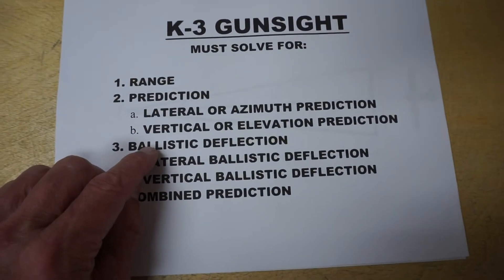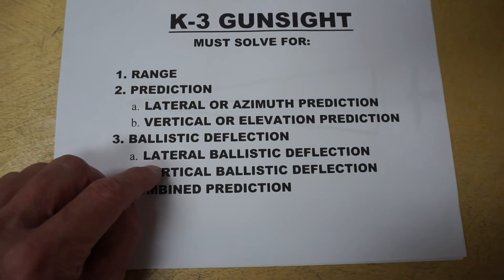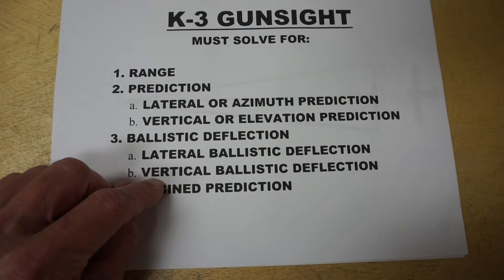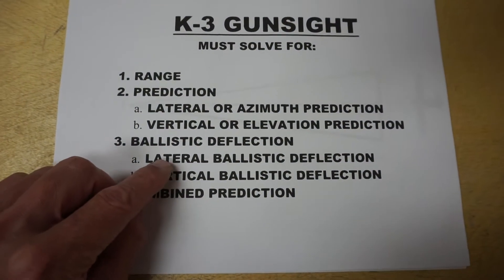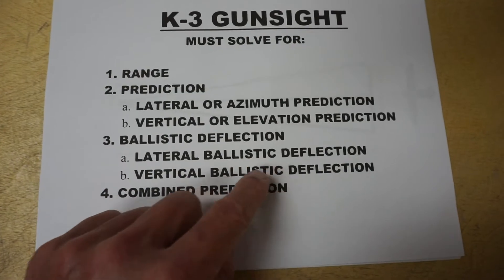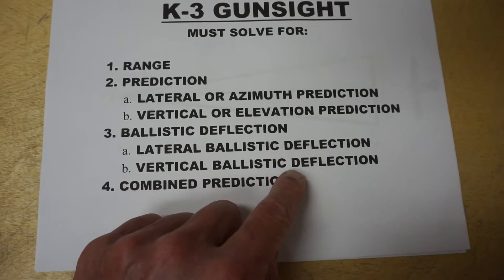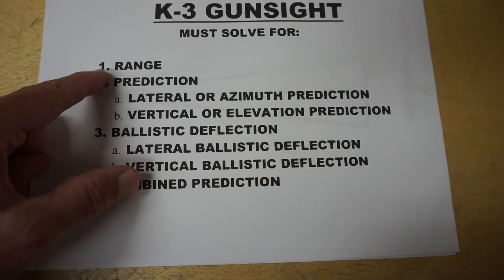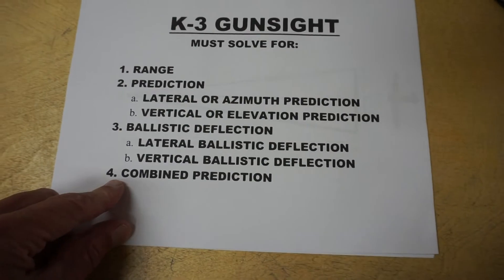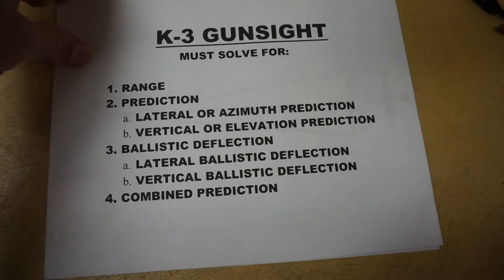Ballistics were involved, as always, in all gun sight functions and aerial gunnery. There was a lateral ballistic deflection and a vertical ballistic deflection. And finally, the K-3 gun sight had to combine all of these to come up with a solution.